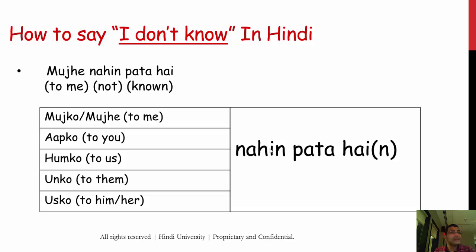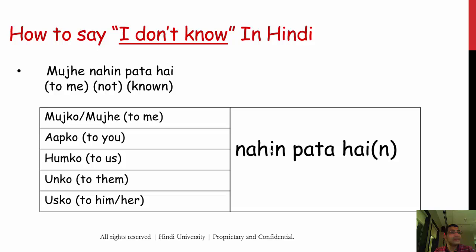The next step is how do you say 'I don't know' in your target language. In Hindi it's: mujhe nahi pata hai. Mujhe means 'to me,' nahi means 'not,' pata hai means 'known' — so literally 'it is not known to me.' You can use it for other pronouns too: aapko nahi pata hai (you don't know), humko nahi pata hai (we don't know), unko nahi pata hai (they don't know), usko nahi pata hai (he/she doesn't know).